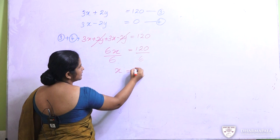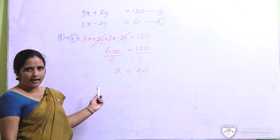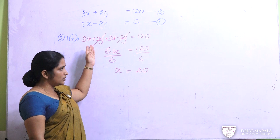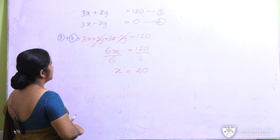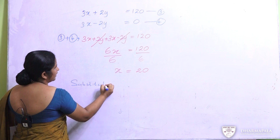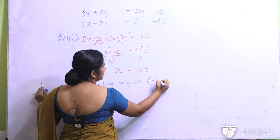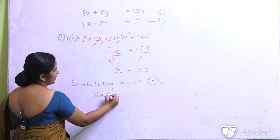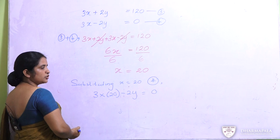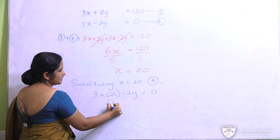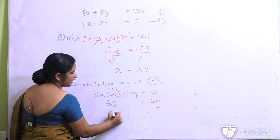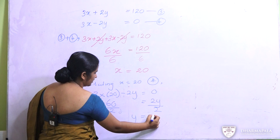To find x, divide both sides by 6: 6x divided by 6 and 120 divided by 6 gives x equals 20. Now we have the answer for x and we also want the answer for y. We substitute x equals 20 into equation 4: 3 times 20 minus 2y equals 0. Taking minus 2y to the other side gives 60 equals 2y. Dividing both sides by 2 gives y equals 30. So x equals 20 and y equals 30.